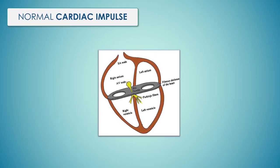The atria and ventricles are separated by a fibrous annulus that is electrically inert. So under normal conditions the AV node and the His bundle form the only electrical connection between the atria and ventricles. This arrangement allows the atria and ventricles to beat in a synchronized fashion and minimizes the chance of electrical feedback between these chambers.